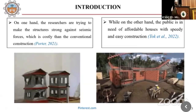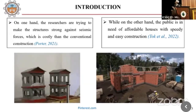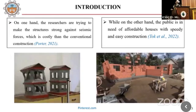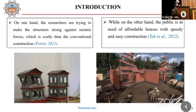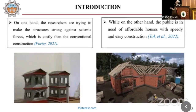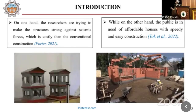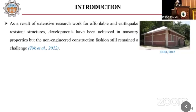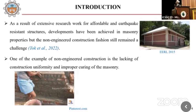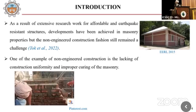We are always talking about resources, disasters, and sustainable materials. On one hand, researchers are trying to make structures strong against seismic forces, while on the other hand, the public needs affordable houses with speedy and easy construction. As a result of extensive research work for affordable and earthquake-resistant structures, developments have been achieved in masonry properties, but non-engineered construction remains a challenge. Here you can see non-engineered construction in progress.